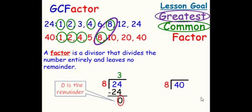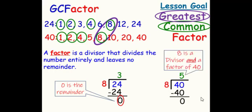When we take a look at 40 divided by 8 which is 5, 5 times 8 which is 40, 40 minus 40 which is 0. 8 is a divisor and a factor of 40 since the remainder is 0. So when we think of factor, we want to always think of division. Divisor.